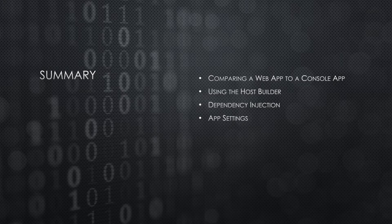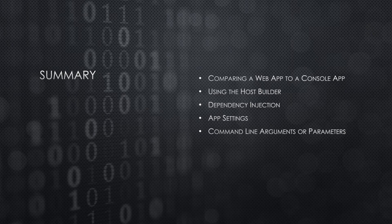App settings — you never want to hard-code any of your app settings into your code. Having the app settings JSON file is key to making your application flexible. Command line arguments, or parameters as you might know them — although the use of command line arguments is far and few these days, it's always nice to have them available when you do need them. Environment variables: another old but very useful feature. You saw how powerful and easy it is to switch from one environment to another.